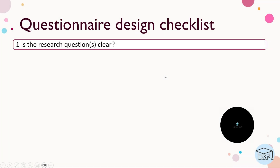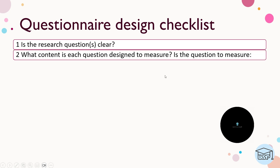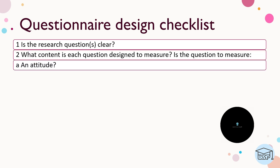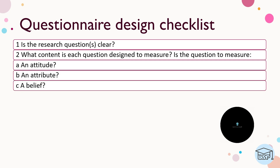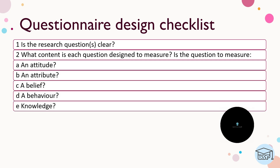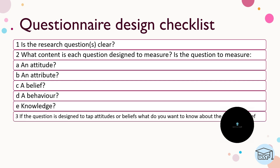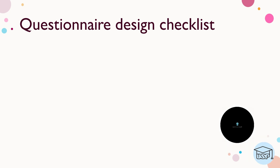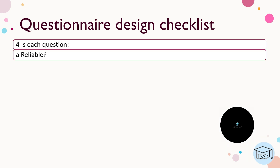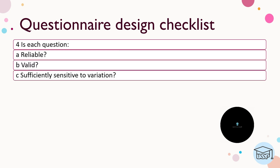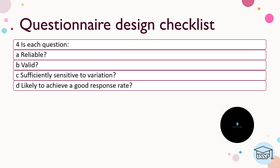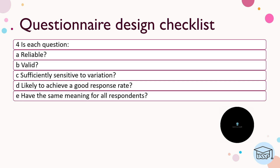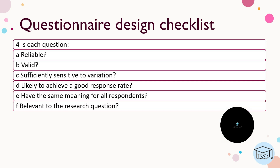Is the research question clear? What content is each question designed to measure — is it an attitude, an attribute, a belief, a behavior, or knowledge? If the question is designed to tap attitude or beliefs, what do you want to know — is it the direction, the extremity, or the intensity? Is each question reliable, valid, sufficiently sensitive to variation, likely to achieve a good response rate, and does it have the same meaning for all respondents relevant to the research question?